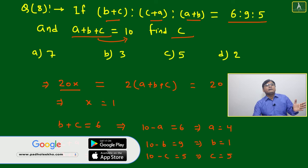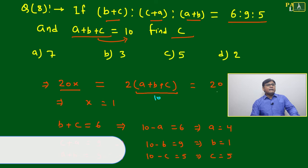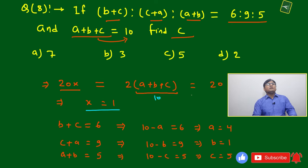We just have to add (b+c) + (c+a) + (a+b). Then a+b+c, we know it is given 10, then it will become 20. Then x will equal to 1.